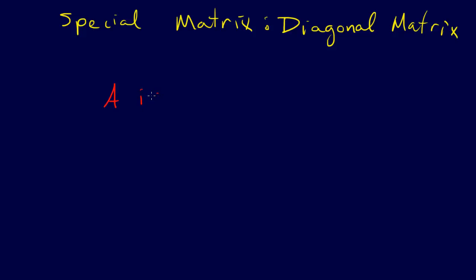If we say the matrix A is diagonal, that means that whatever size A is, m by n, it doesn't have to be square, it doesn't have to be anything special here.